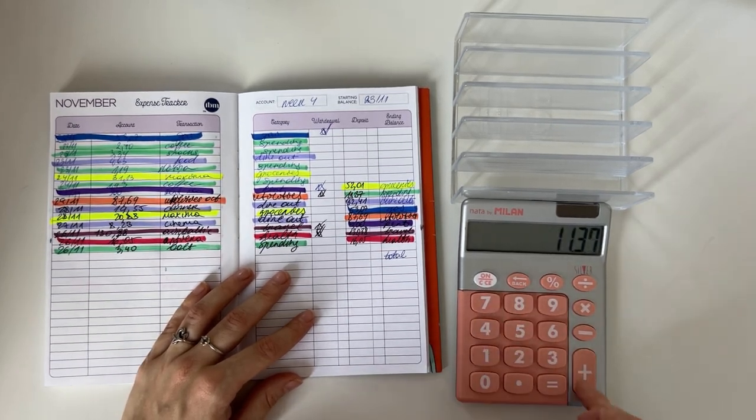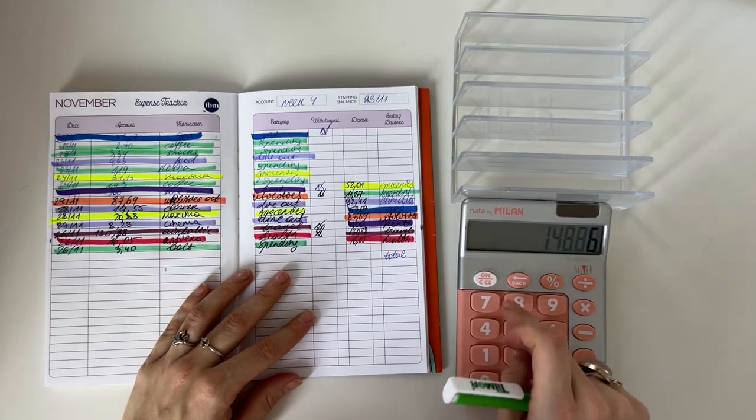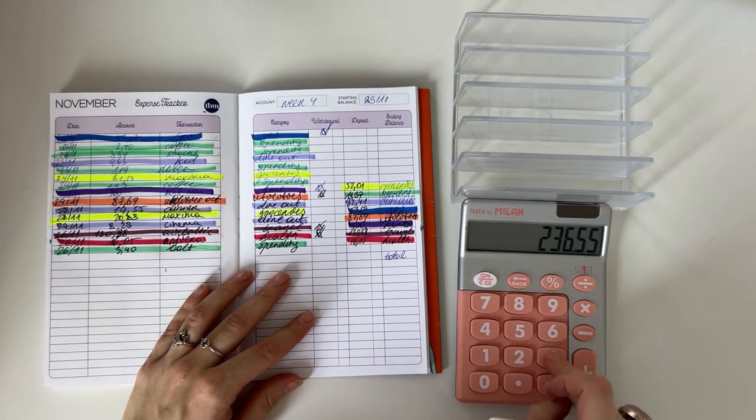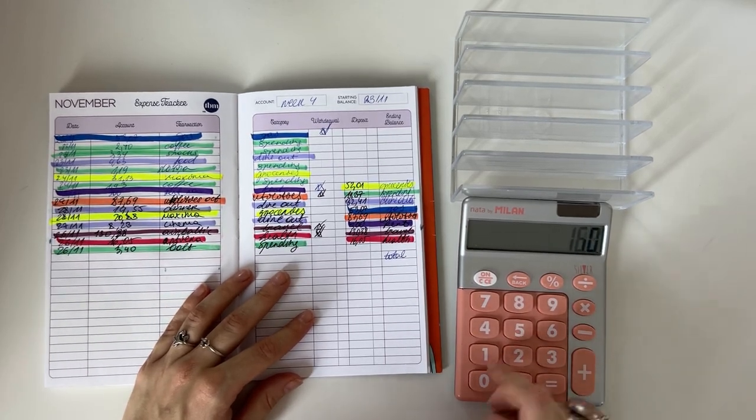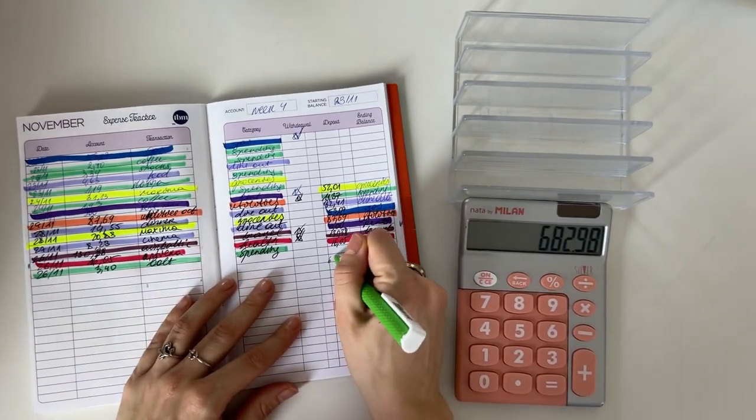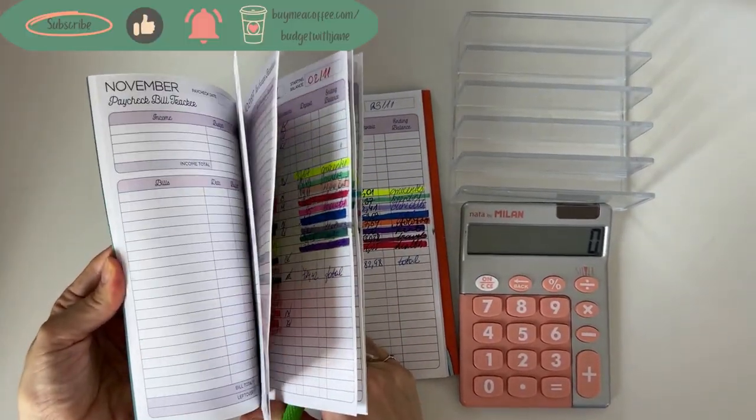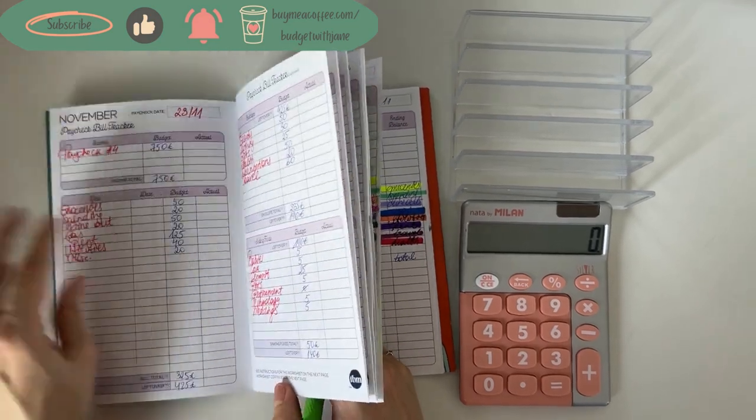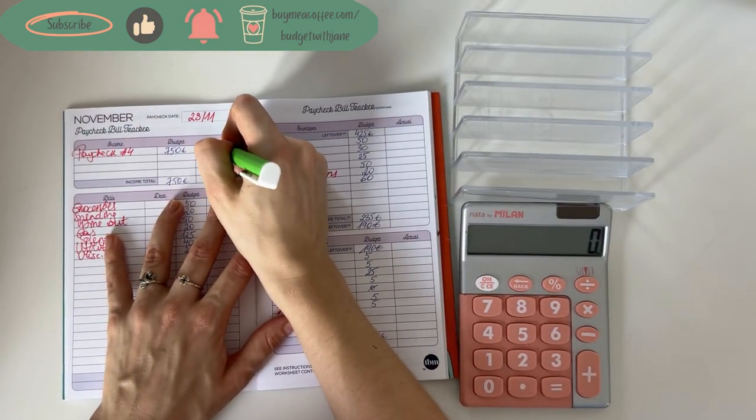I did something wrong because that's definitely not correct. Let me calculate it again. 52.01 plus 11.37 plus 32.41 plus 53.07 plus 87.69 plus 300 plus 130.38 plus 16.05 is 682 euros and 98 cents. Perfect.